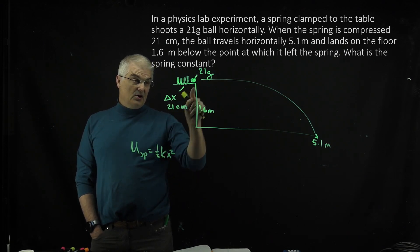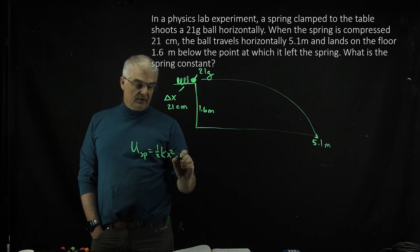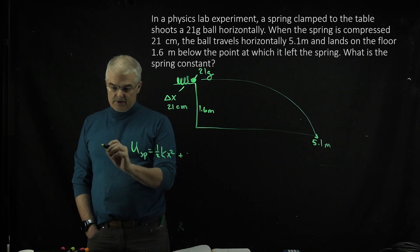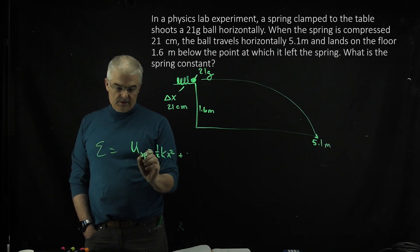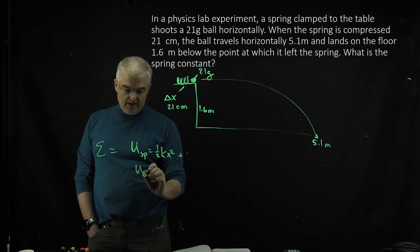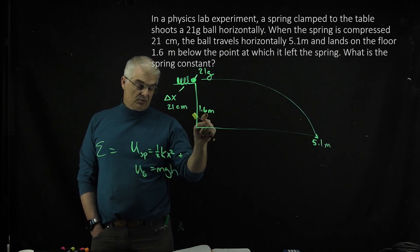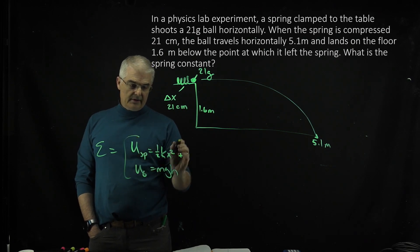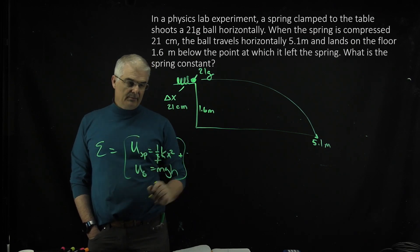But also on this launcher, you've got mgh. So this is the total energy, I should say. It's the spring potential energy, and we've also got the gravitational potential energy, which is mgh, where h is 1.6 and g is 9.8, and we know the mass. So this is our total energy before, if you add these two up.